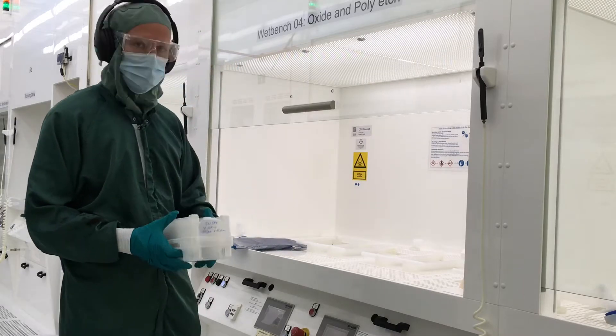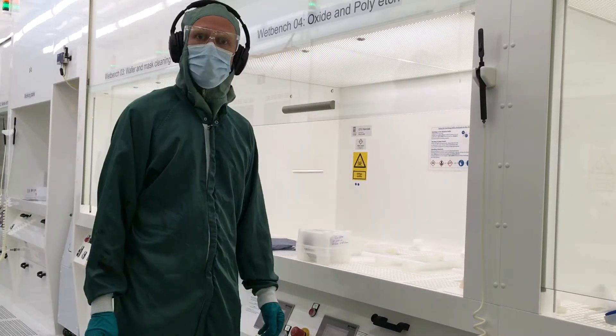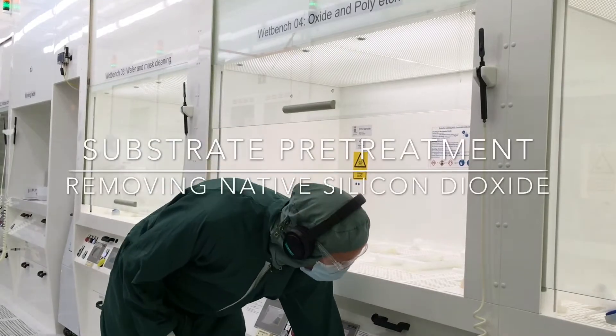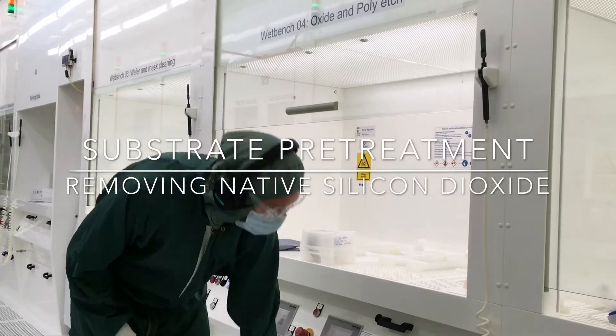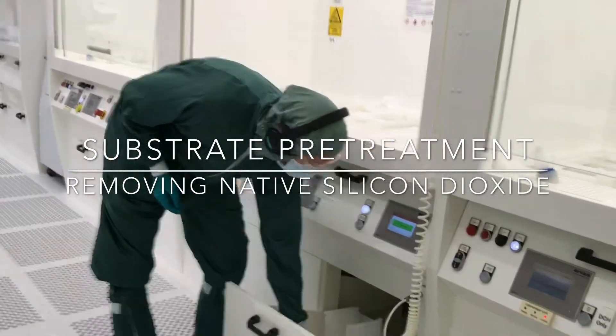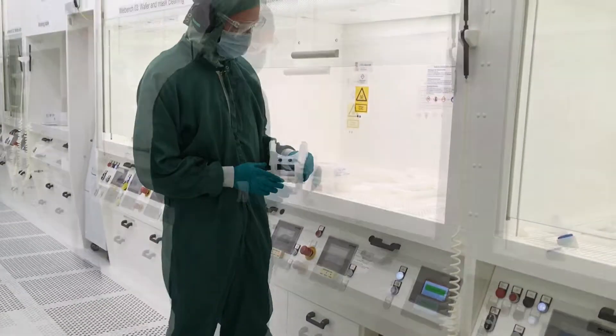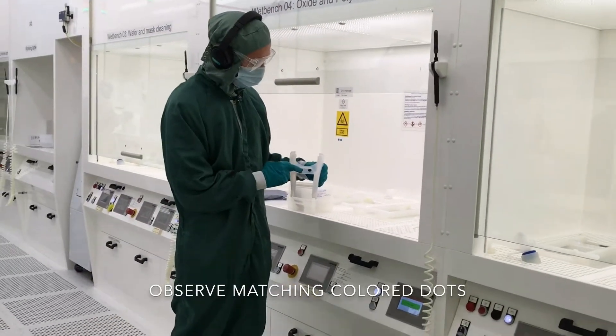We remove the native oxide that is on the silicon using hydrochloric acid. In the drawer on the bench we have color marking for the bottles.